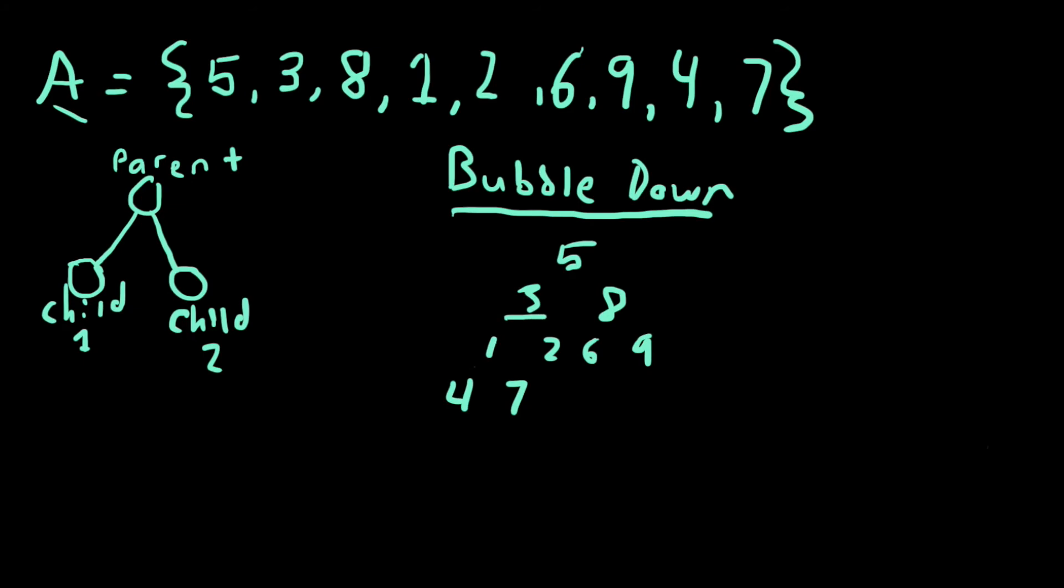Now we will be looking at 3, which has children 1 and 2. 1 is less than 2, so it becomes the minimum value, and compare that to 3. 1 is also less than 3, so we swap those two values, and 1 becomes the parent node.